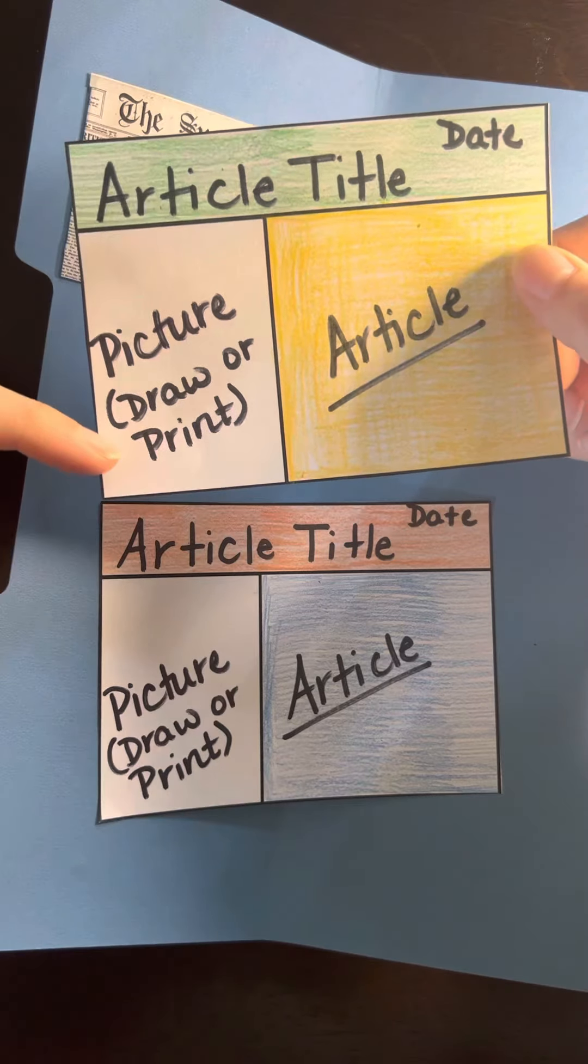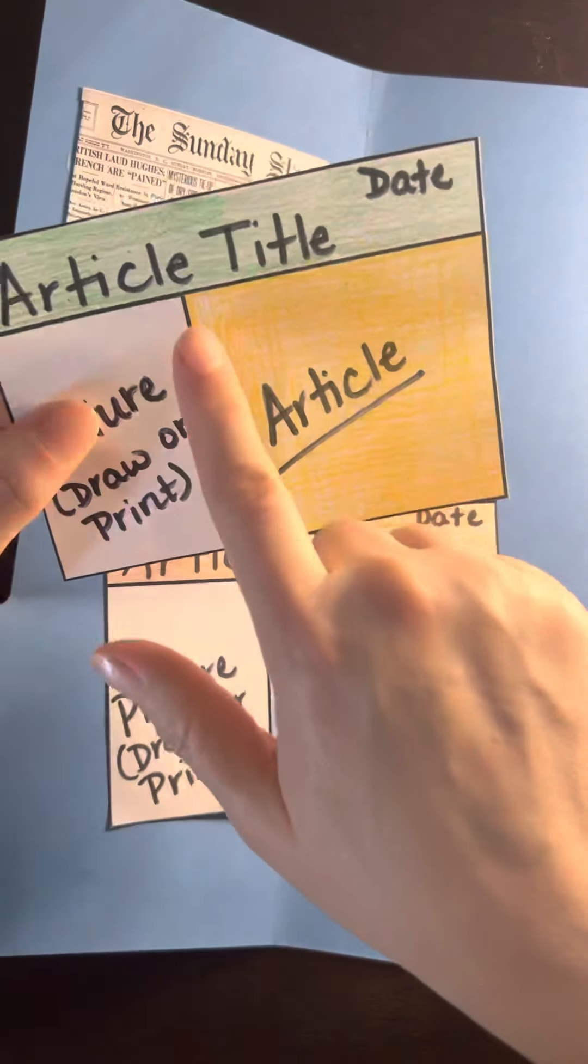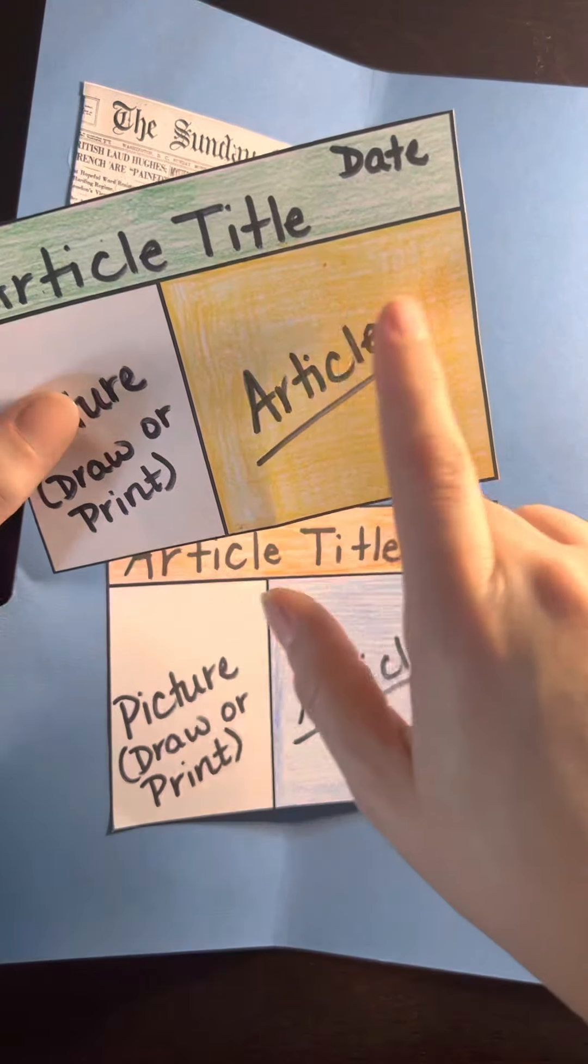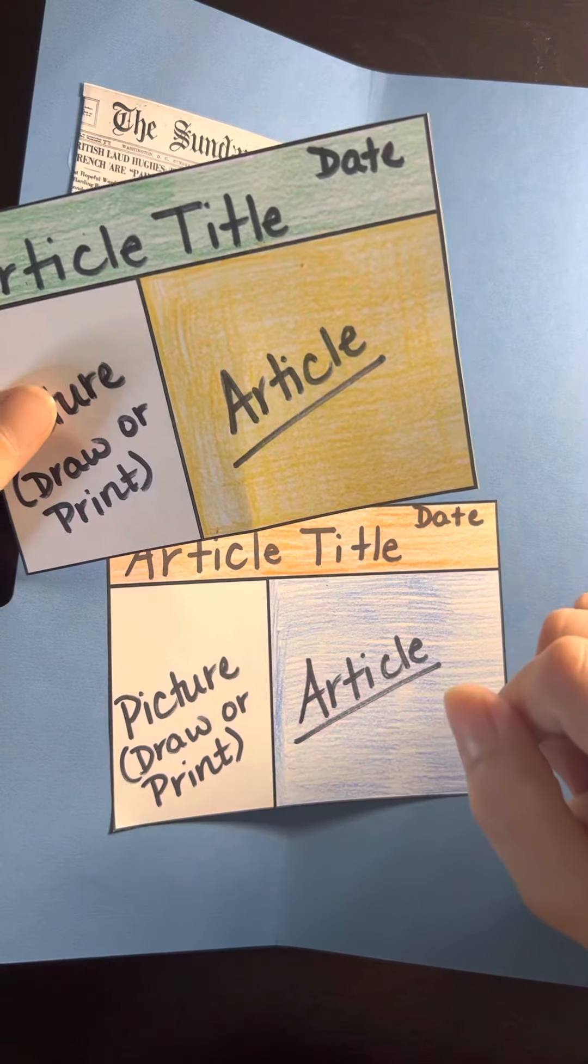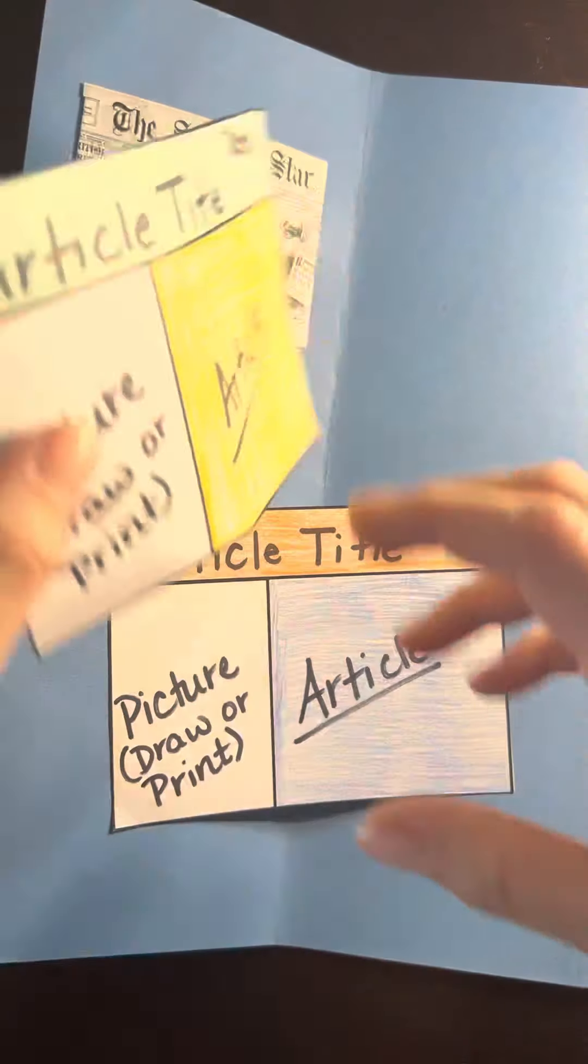You can draw a picture, print a picture. And then you're going to make sure you don't write too big because you want to include information about what happened like you were writing a newspaper article. And you'll do two of those.